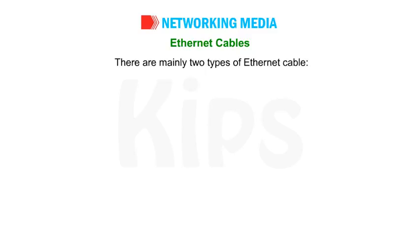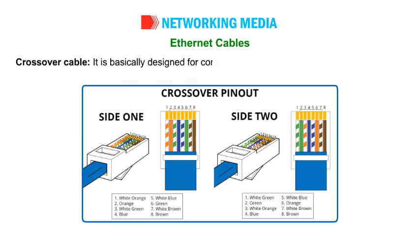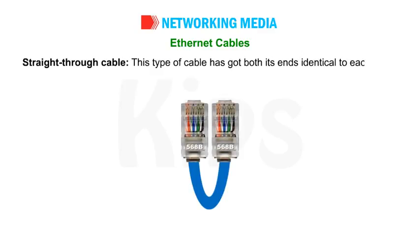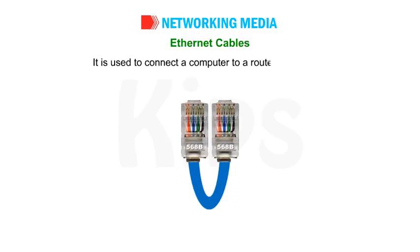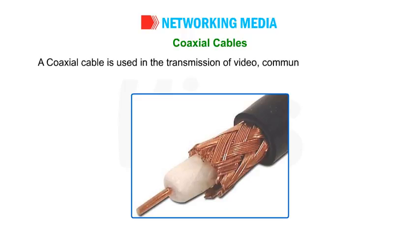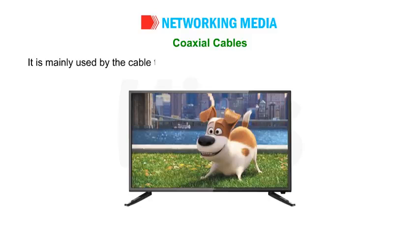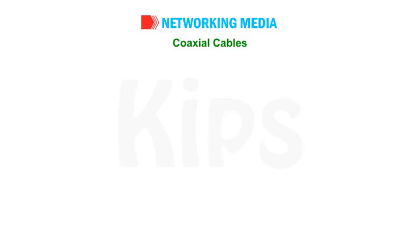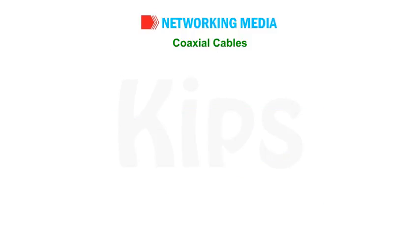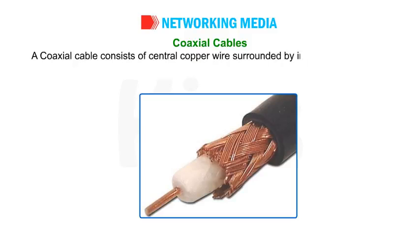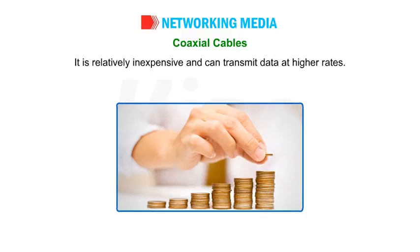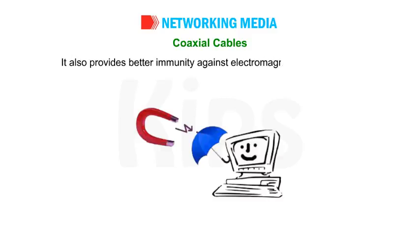There are mainly two types of Ethernet cable. Crossover Cable: designed for connecting two computers without a hub or router. Straight Through Cable: has both its ends identical to each other and is used to connect a computer to a router or a switch. Coaxial Cables: A coaxial cable is used in the transmission of video, communications and audio. It is mainly used by the cable television industry. It can also be used in networks and has high bandwidth and greater transmission capacity. A coaxial cable consists of a central copper wire surrounded by insulation and then a shield of braided wire. It is relatively inexpensive and can transmit data at higher rates.